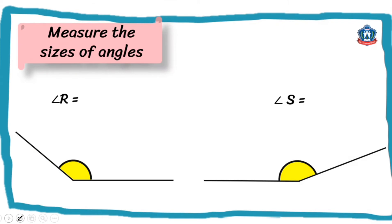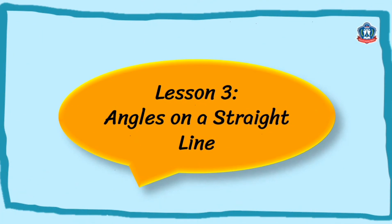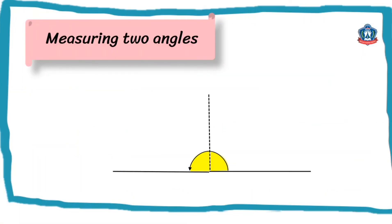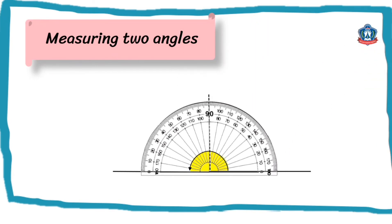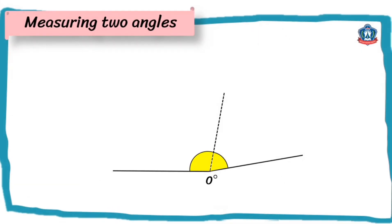You can try to measure these angles yourselves and find their sizes. Now let's study about angles on a straight line. I have here two right angles. A right angle measures 90 degrees, so if we have two right angles that is equal to 180 degrees. And remember, an angle that measures 180 degrees is what we call a straight angle.